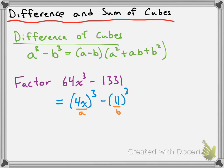So to factor this then, the first part is a minus b. So we'll have 4x minus 11. And then we're going to have open brackets.